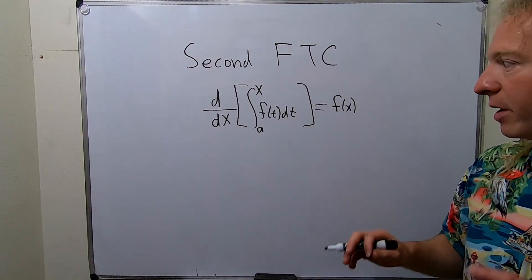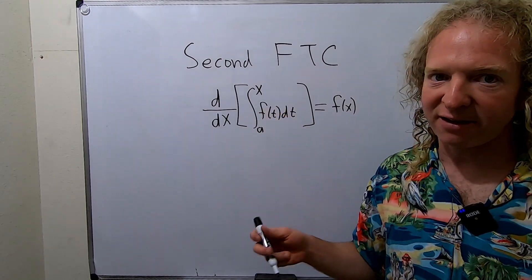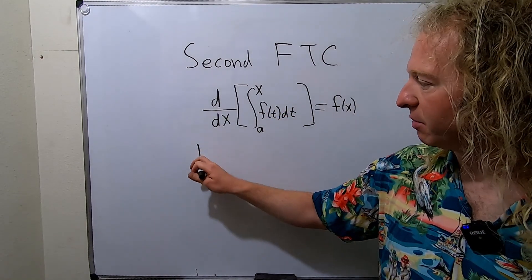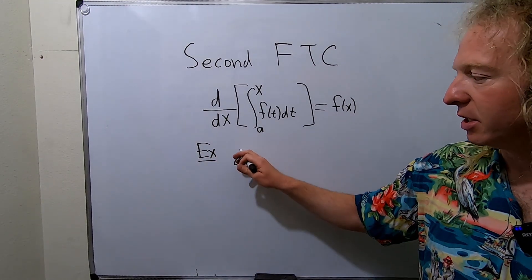So let's do a simple example right away, and then maybe we'll go through the proof. Again, the condition here is that f is continuous. Let's do a simple example so you see how simple this actually is. It looks really hard, but it's actually really easy.